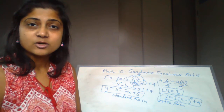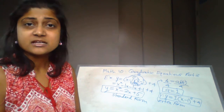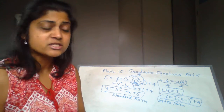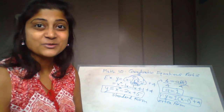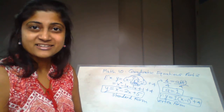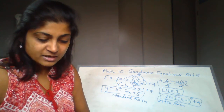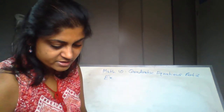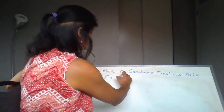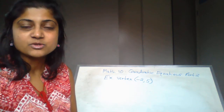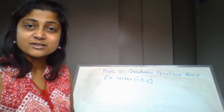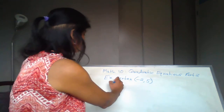This is the standard form of the equation; the vertex form is on the other side. You have to be very comfortable with changing the quadratic equation from vertex form to standard form and back again — you should even be able to change it into factored form. Let's move on to the next example: find the equation for the parabola.